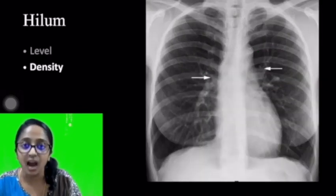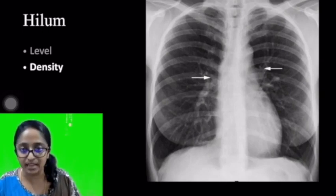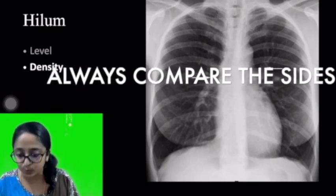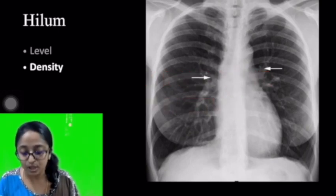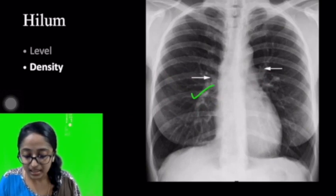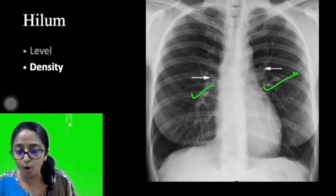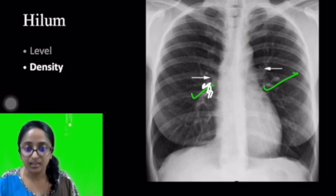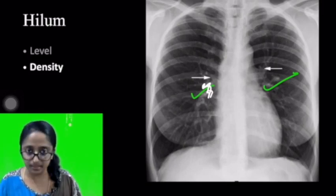Coming to the next aspect of assessing the hilum — the density. It is a rule in radiology: whenever you're comparing radiographs or any imaging modality, compare the sides — right and left. The same rule applies to the hilum; you have to look for symmetry in size and density. In this image, as pointed out by the arrows, the right and left hilum appear more or less similar in density — this is normal. Any abnormality in density, say if one side appears denser, may indicate pathology. For example, lymphadenopathy can make that hilum look more dense.